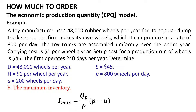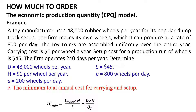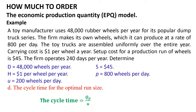The second question is to find the maximum inventory, which equals Q_p / p × (p − u) = 2,400 / 800 × (800 − 200) = 1,800 wheels. The third question is the minimum total annual cost: TC_min = I_maximum × H / 2 + D × S / Q_p = 1,800 × 1 / 2 + 48,000 × 45 / 2,400 = $1,800.